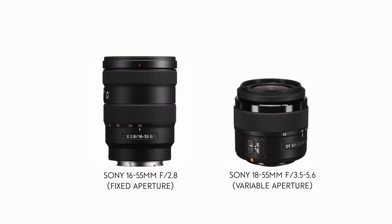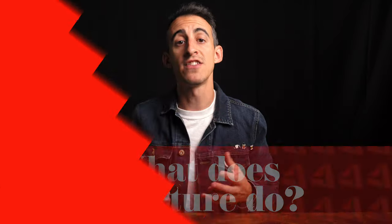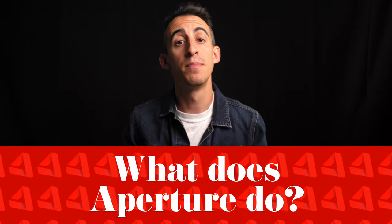Some zoom lenses will have a fixed aperture, meaning that no matter how far zoomed in you are the base aperture remains the same. Some have a variable aperture, meaning that as you zoom in the base aperture available is going to be a higher number and let less light in. Now, aperture is one of the three settings that make up the triangle of exposure, in addition to shutter speed and ISO, which we'll get to in future videos.